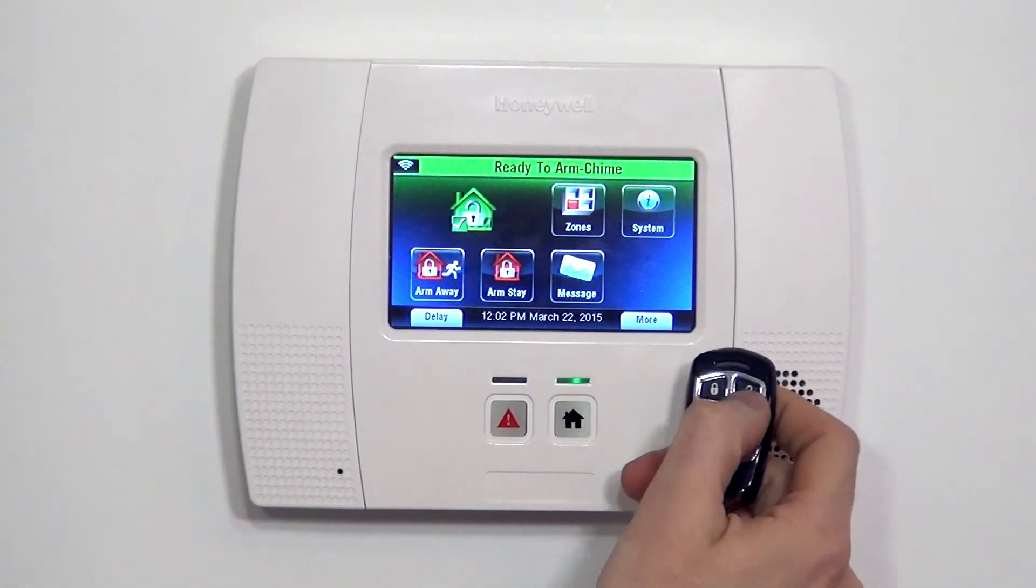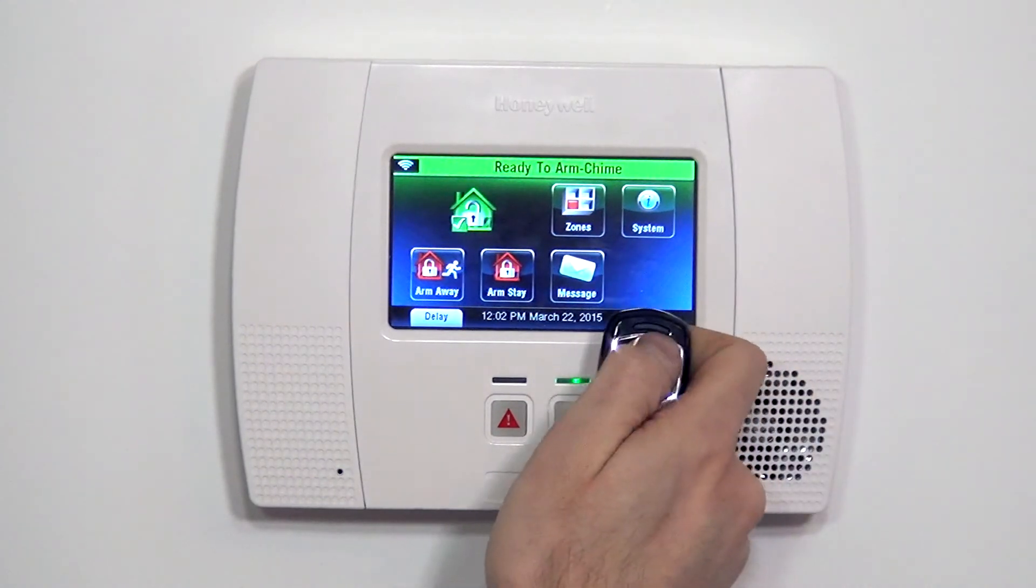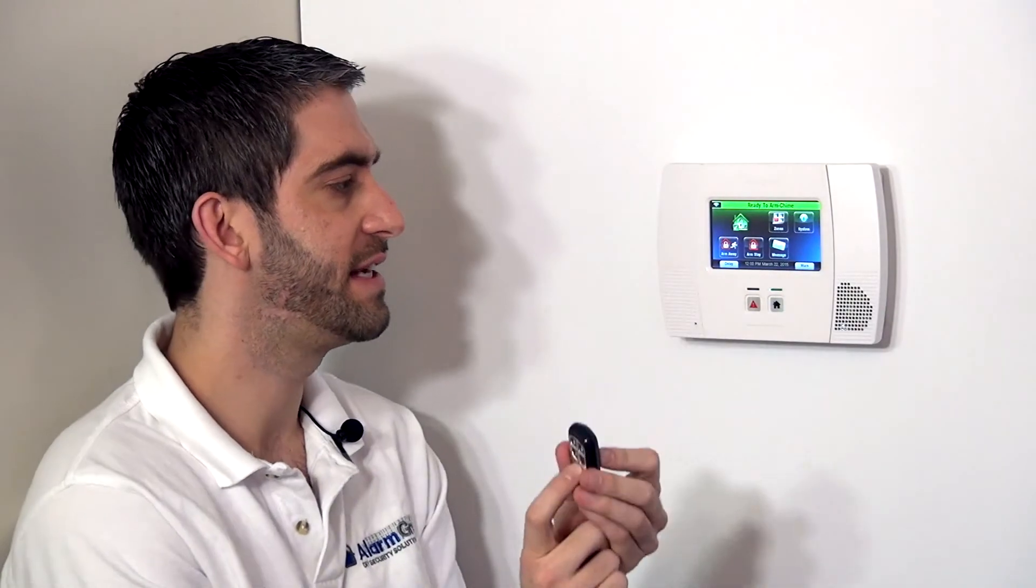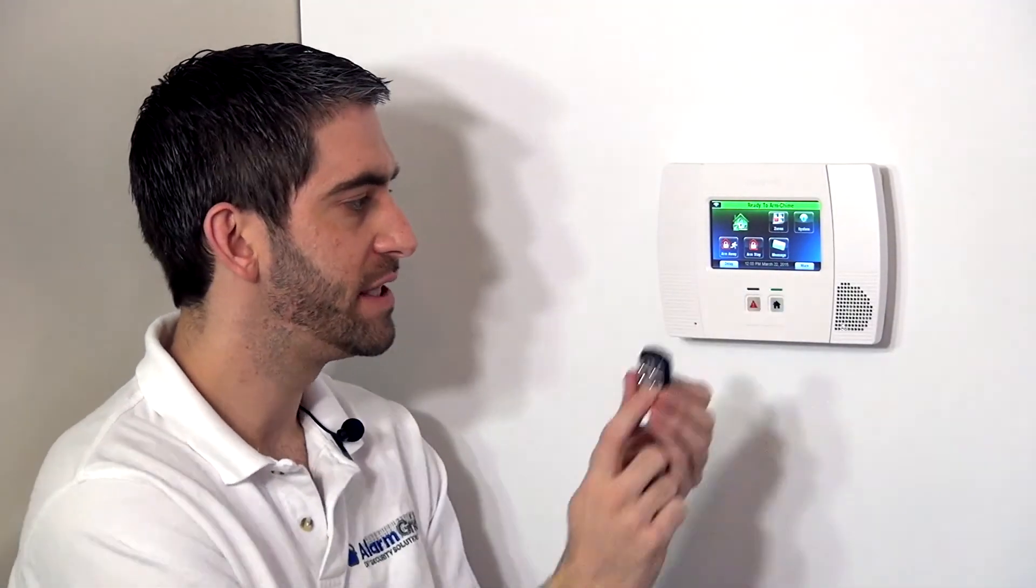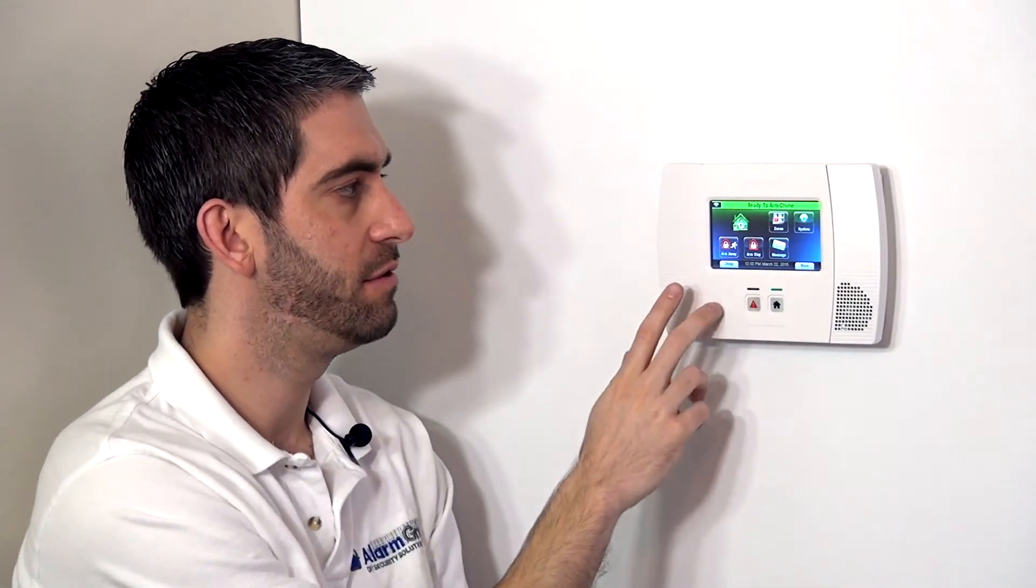If you notice on this fob, the LED lights up green when we press our button, and that indicates that we're using the standard security mode. On the 5834 series key fobs, there's actually a high security mode where instead of sending the same data every time to the panel, it sends a rolling encrypted message from this device to the panel. You may have heard of that with like garage door remote controls as well.